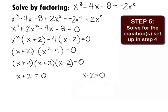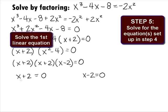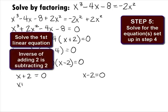In Step 5, we want to solve the linear equations set up in Step 4. For the first equation, x plus 2 equals 0, the inverse of add 2 is to subtract 2 from both sides, which will give us x plus 2 minus 2 equals 0 minus 2, which will simplify to be x equals negative 2.